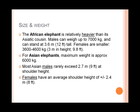The size and weight. Generally speaking, the African elephant is relatively heavier than its Asiatic cousin. Males can weigh up to 7,000 kg and can stand at 3.6 meters at shoulder height. Females are a little bit smaller at 3 meters in height. For Asian elephants the maximum weight is more or less 6,000 kg — that's 1,000 kg less — and most Asian males rarely exceed 2.7 meters at shoulder height.